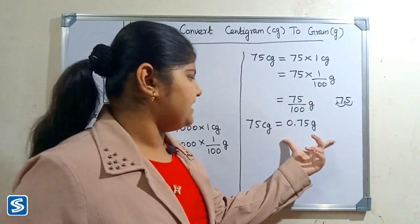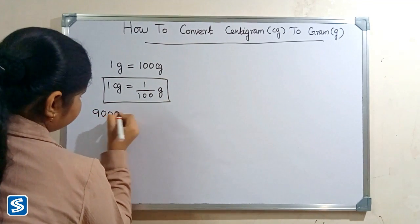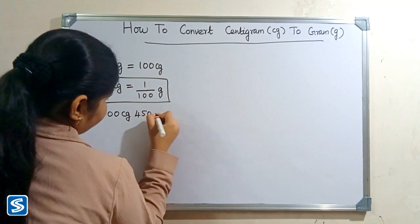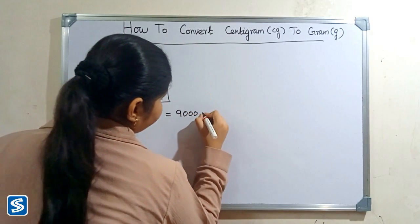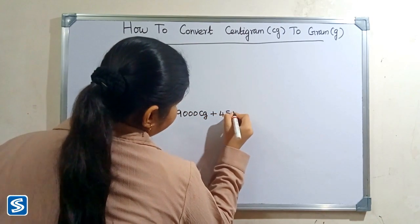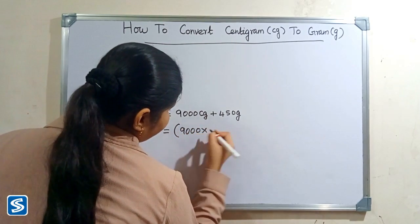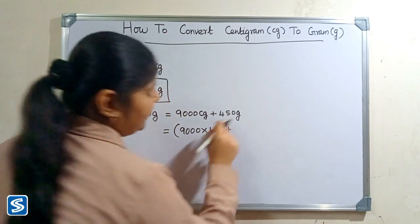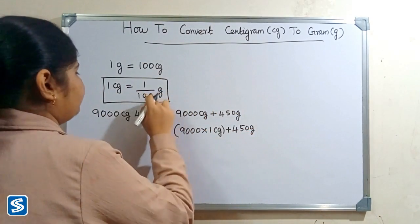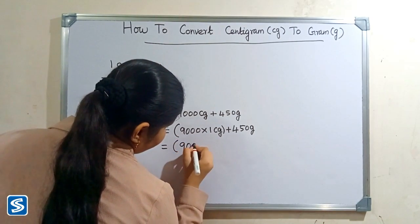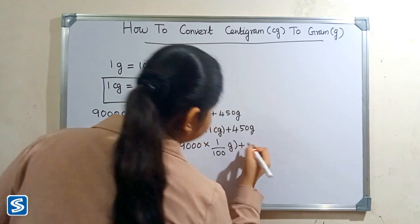Next we will take one more example: 9,000 centigrams plus 450 grams. 9,000 centigrams can be written as 9,000 multiplied by one centigram plus 450 grams. Now we have to substitute one by 100 grams in the place of one centigram, so 9,000 multiply one by 100 grams plus 450 grams.